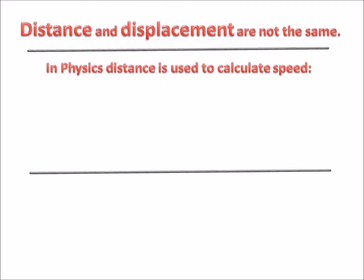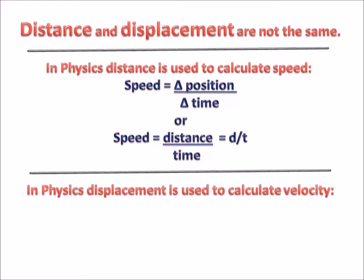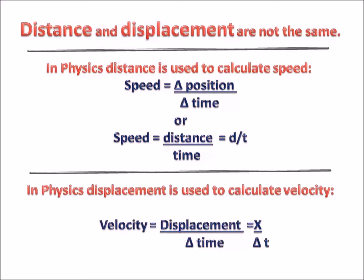In physics, distance is used to calculate speed. Speed is change in position over change in time, or distance divided by time — d over t. Displacement is used to calculate velocity. Velocity is equal to displacement over time, or x — which stands for displacement — over delta t, which is time.